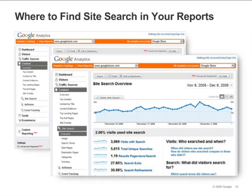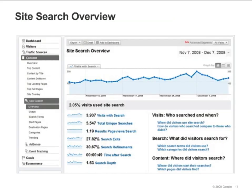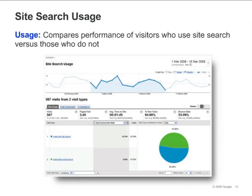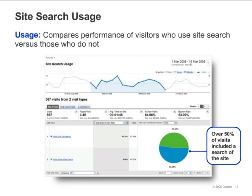The site search reports are located in the content section of Google Analytics. Click on the site search navigation button to see all of the reports. By analyzing your site search reports, you can find out which products or items visitors are looking for, where visitors started their search and where they ended up after searching, and whether searches resulted in conversions. The site search overview summarizes the search activity on your site, and here we can see that over half of all visits to this site included some form of internal site search, strongly indicating that internal site search is a popular feature on this website.